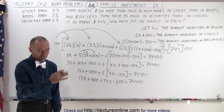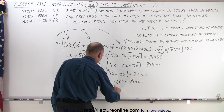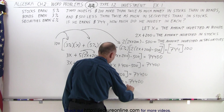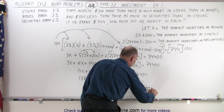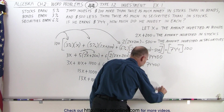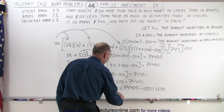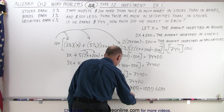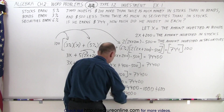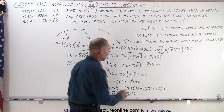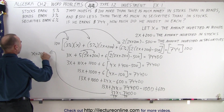Now we move all the x terms to one side — they're already on the left — and all the numbers to the other side. We get 13x plus 24x equals 74,400, then moving 1,000 across gives minus 1,000, and moving minus 600 across gives plus 600. So 37x equals 74,000. Dividing both sides by 37, we get x equals 2,000.